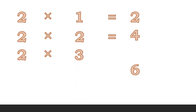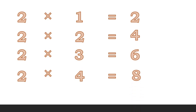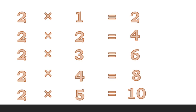Two threes are six. Speak with me — two threes are six. Two fours are eight. Two fives are ten. Speak with me — two fives are ten. Now we are going to reverse.